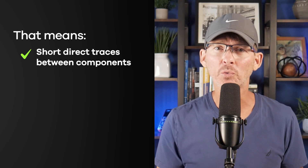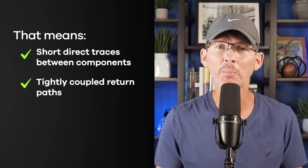That means short, direct traces between components and tightly coupled return paths. If you're routing a switching power regulator, put the switch, diode, and cap as close together as physically possible. If you're routing a high-current power rail, avoid routing it in a loop around the board. Small changes in loop size can have a massive impact on emissions. If those emissions exceed FCC or CE limits, even slightly, you'll fail certification. And if you skip testing and ship a noisy board without certification, you might just find the FCC knocking on your door one day.